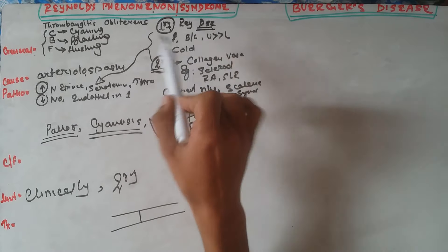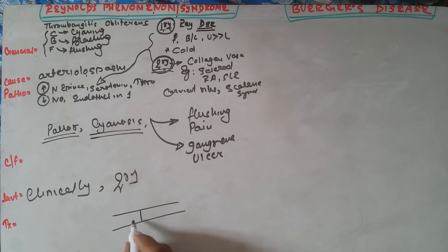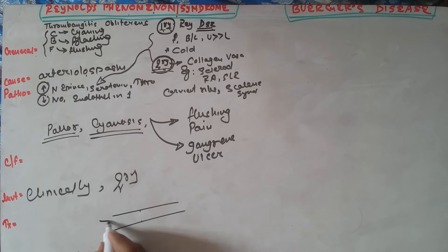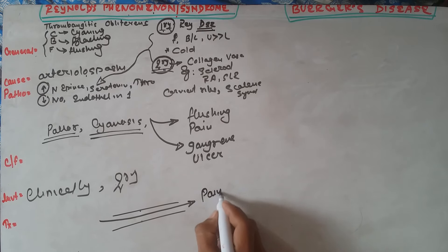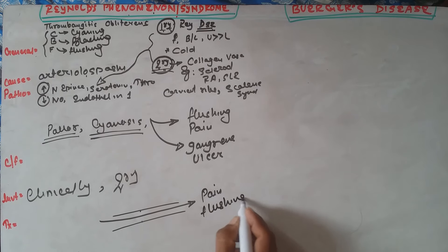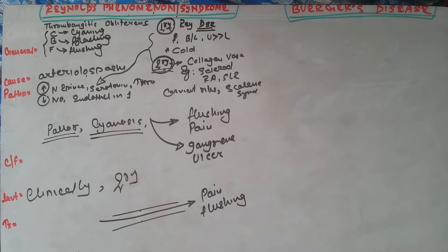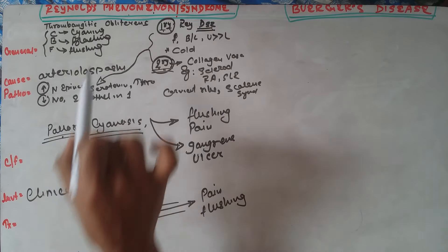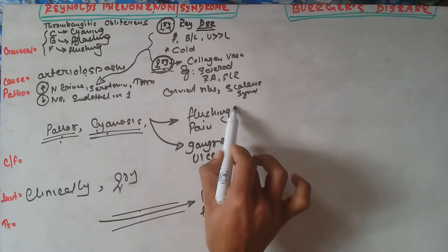The most common stimulus for primary Raynaud's disease is cold exposure. Once cold exposure is removed it takes about 15 to 20 minutes for symptoms to resolve. After resolution, the blood supply reperfuses and during reperfusion the patient feels pain as well as flushing. So the clinical presentation is: during vasospasm there is pallor and cyanosis, and once perfusion is re-established there is flushing and pain.